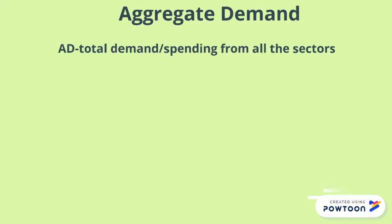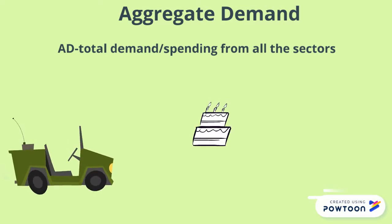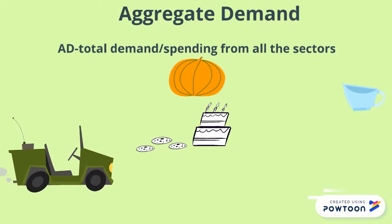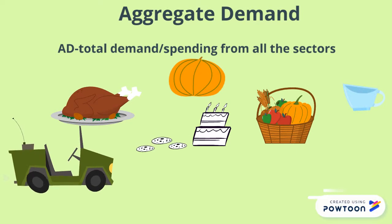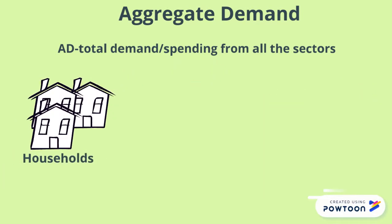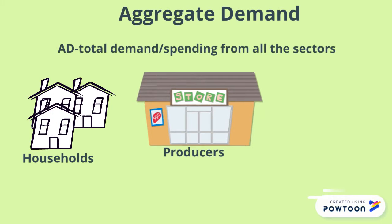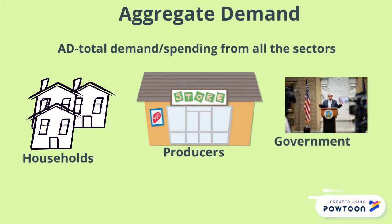Aggregate Demand, or AD, is the total demand for goods and services from all the sectors in an economy, or the total spending done by all the sectors. When I say all the sectors, I mean households, producers, government, and the overseas sector.